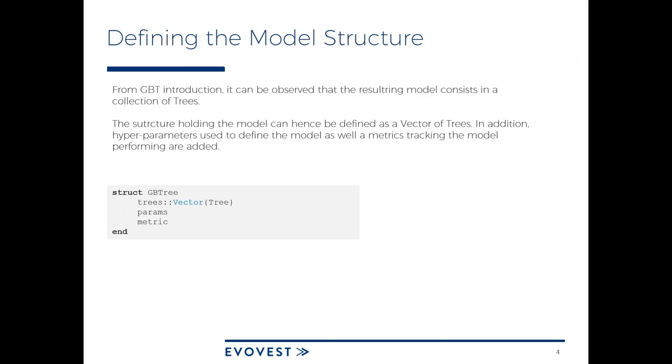With that in mind, we can see that defining a structure for gradient boosted trees can be as simple as having a vector of trees. To that, we add the parameters that were used for training the model and the metric that was tracking the performance on our out-of-sample dataset.